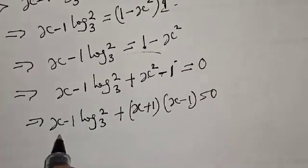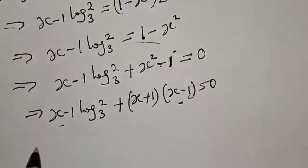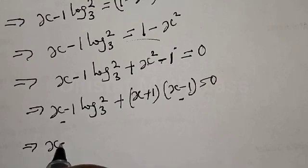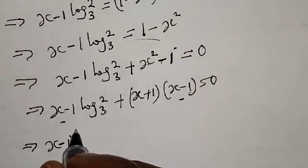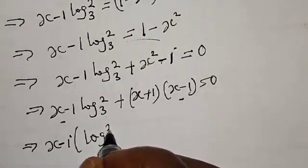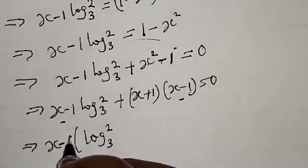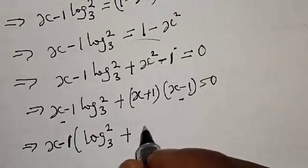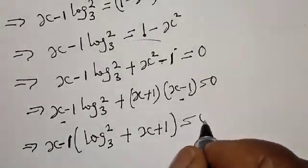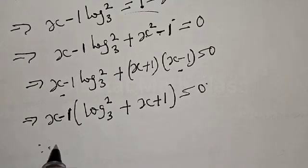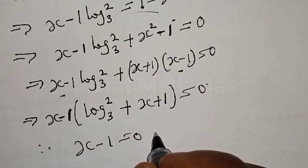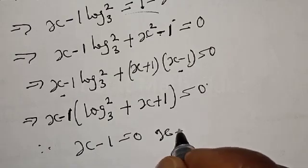Something is common — x minus 1 is common. We can factor it out. This implies we have x minus 1 times log 2 base 3 plus x plus 1 equal to 0. Therefore, x minus 1 equals 0, which gives x equal to 1.